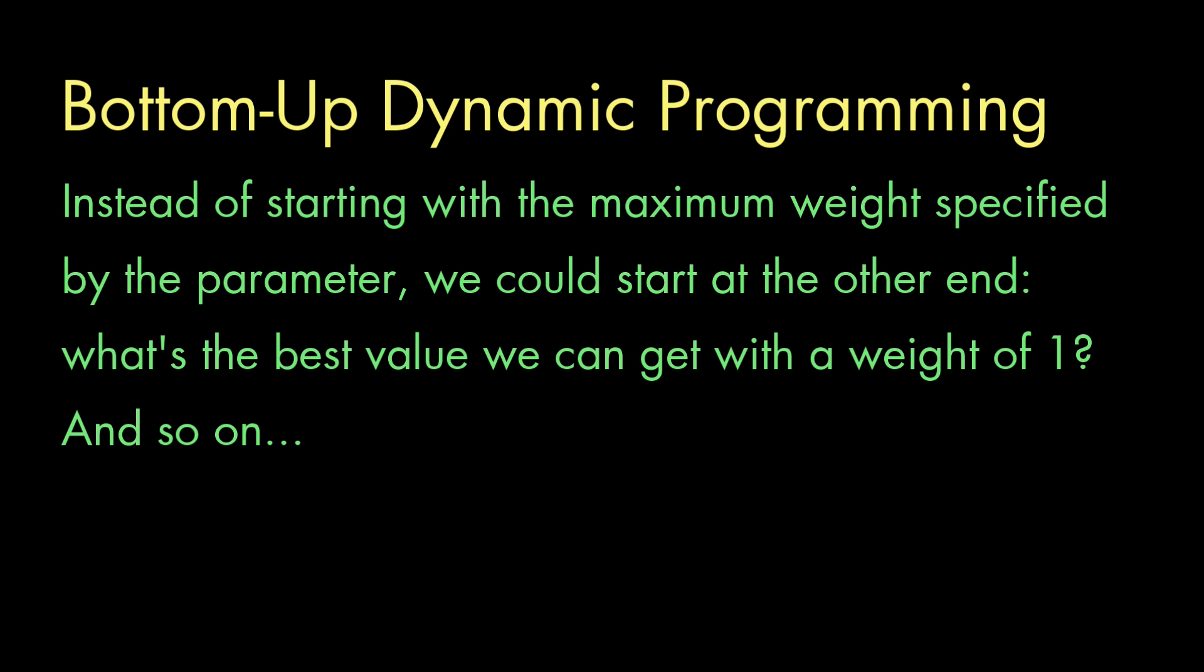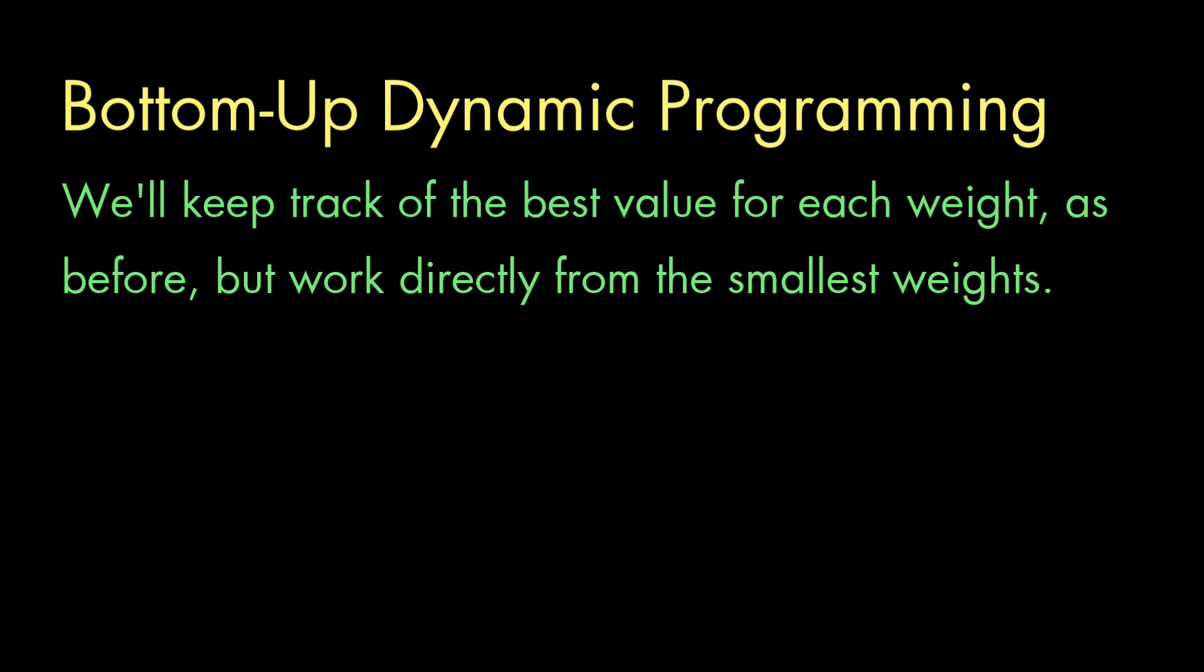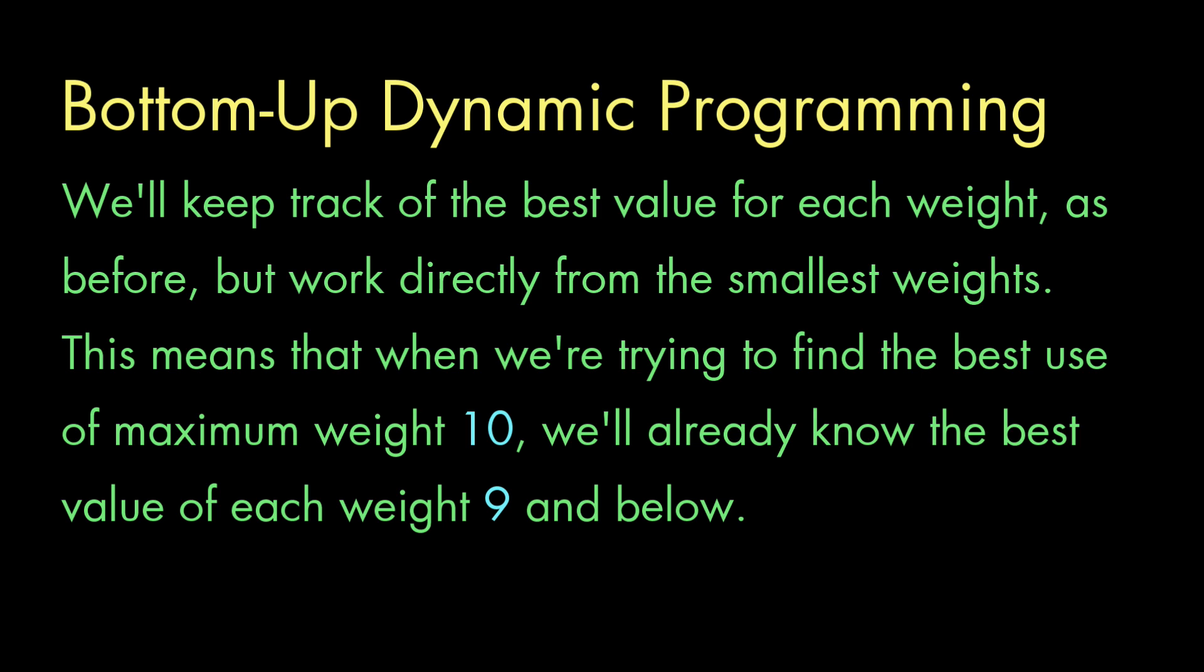Instead of starting with the full weight of the knapsack, we could start by asking, what's the best way to make use of a knapsack with maximum weight 1, and then one with maximum weight 2, and so on. Because this is dynamic programming, we'll keep track of all the previous results, which means that when we're trying to compute the best use of, say, 10 units of weight, we'll have access to all the best results from weights 1 through 9. And in fact, to make the code a little simpler, we'll store all the way down to weight 0, which, of course, has to have a best use of 0.